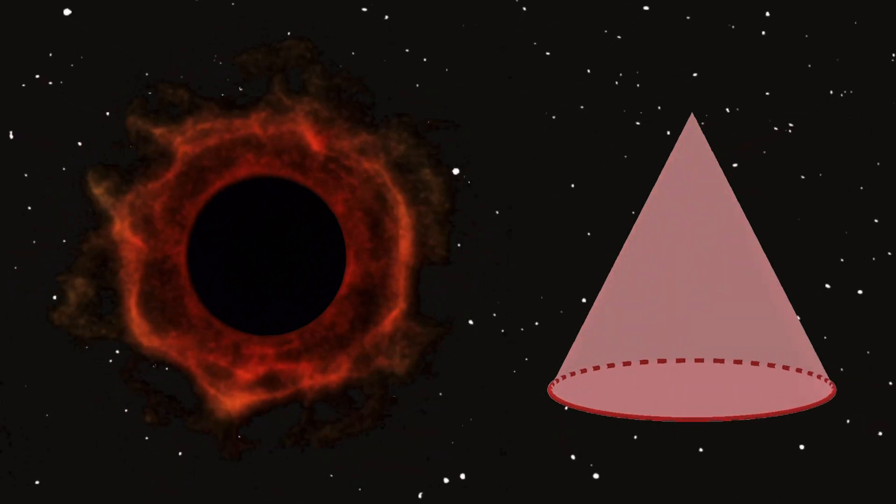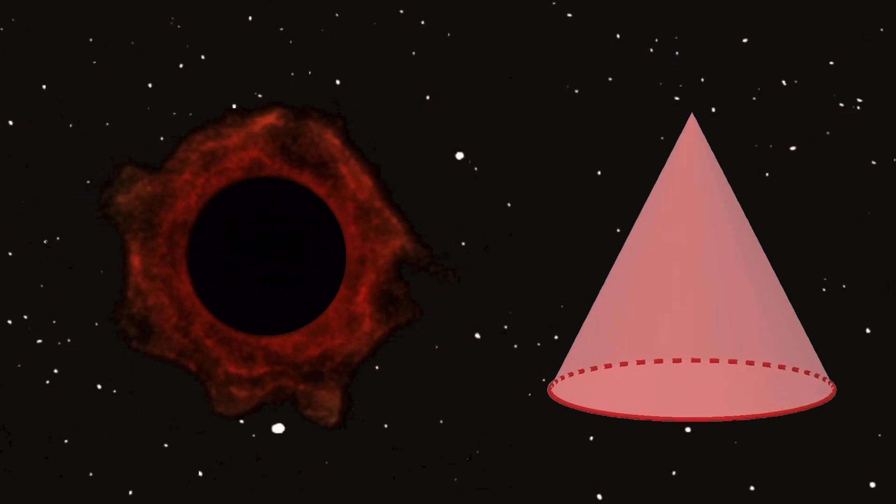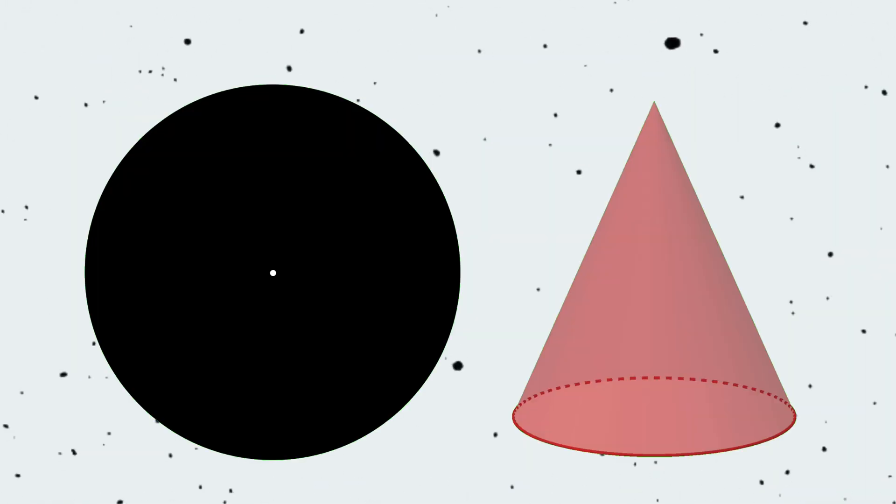Black holes and cones, two very different objects with one striking similarity. They both contain what's known as a singularity.